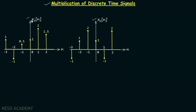The first signal is x1n and the second signal is x2n, and we are required to find out x1n multiplied by x2n. In case of multiplication of discrete time signals, we simply multiply the corresponding samples — that is, the samples of signal x1 and signal x2 corresponding to the same value of n.